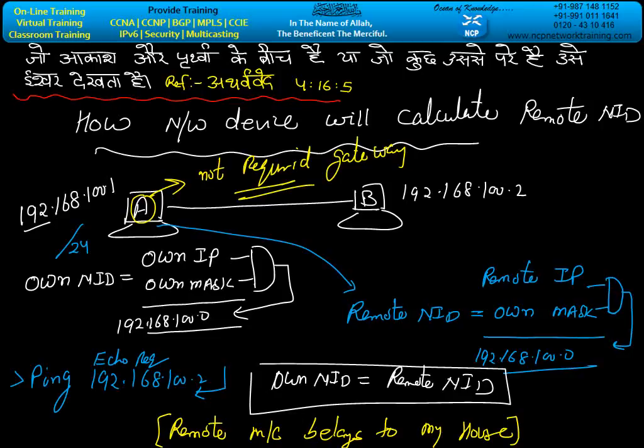The source machine will not take help of the gateway or require the gateway. If source machine NID and remote machine NID are the same, it means the remote machine belongs to the LAN, local area network, or you can say belongs to my house. If anybody is living in my house, no need to contact the outsider - I can call directly.